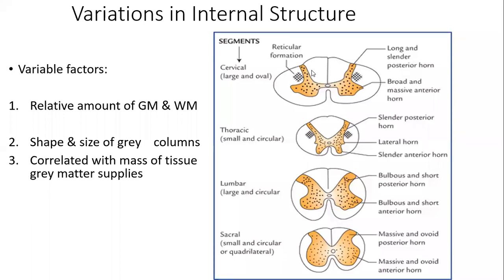White matter increases superiorly because ascending sensory fibers carrying sensations from the body progressively add up as they ascend the spinal cord. Descending motor fibers, on the other hand, gradually decrease in number from upward to downward, because some fibers keep terminating at each segment of the spinal cord. So descending tract fibers decrease downward while ascending sensory fibers increase going upward.